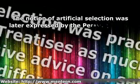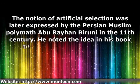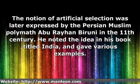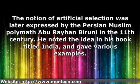The notion of artificial selection was later expressed by the Persian-Muslim polymath Abu Rayhan al-Biruni in the 11th century. He noted the idea in his book titled India, and gave various examples.